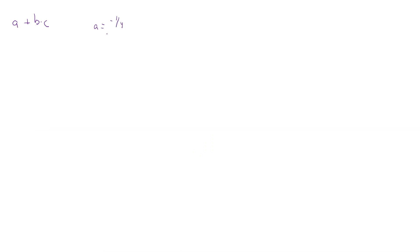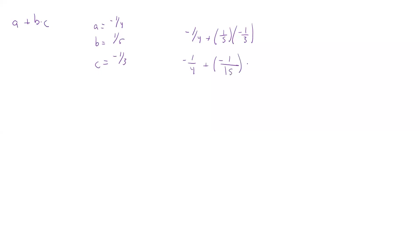Let's look at another one. Say we have a plus b times c, and a equals negative one fourth, b equals one fifth, and c equals negative one third. We plug in these values: negative one fourth plus one fifth times negative one third. We'll leave our negative one fourth out front and do the product next. One times negative one is negative one, and five times three is 15.